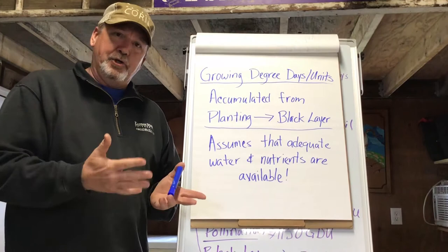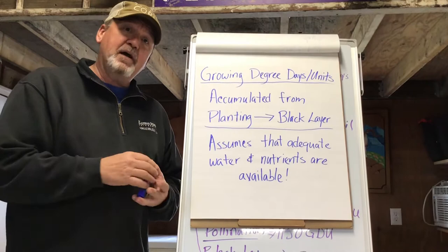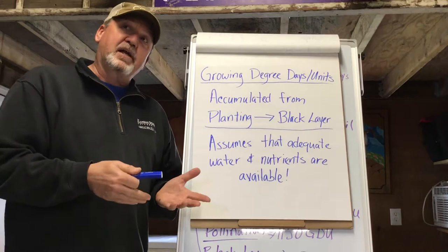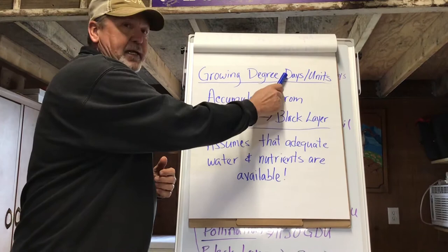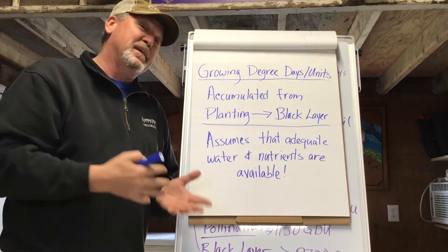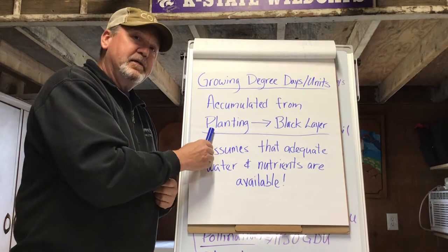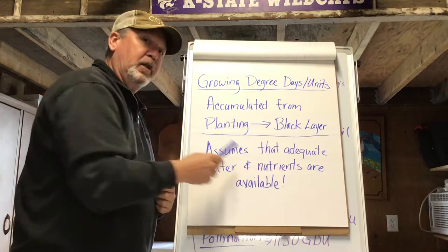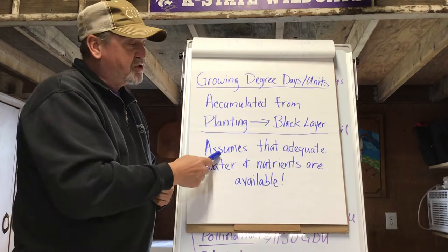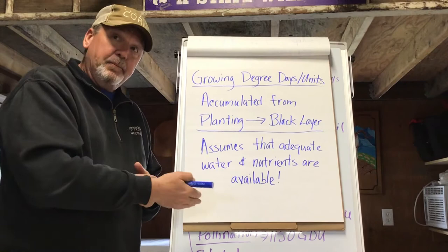It's not anything new — actually it's been around since the 1730s. It was developed by a French scientist named Raymer. Growing degree days, also called growing degree units, sometimes called heat units or thermal units — I'm going to refer to them as growing degree units moving forward. They are accumulated from when a seed is planted until it reaches black layer. It also assumes that the plant has adequate water and nutrients available to grow.